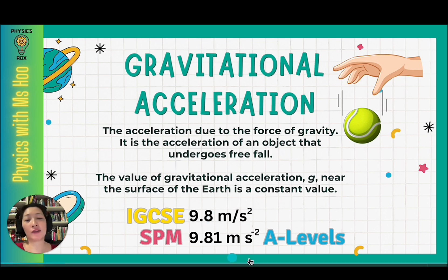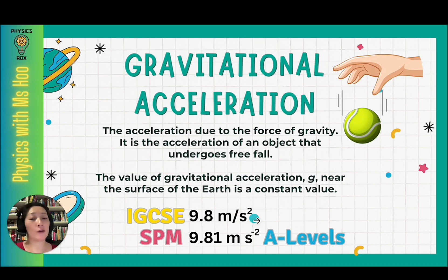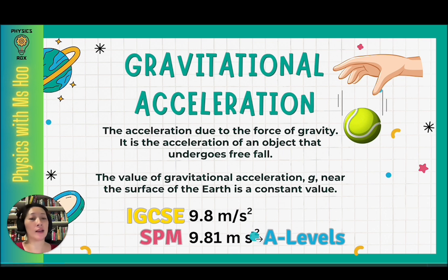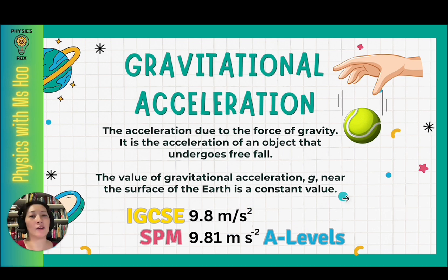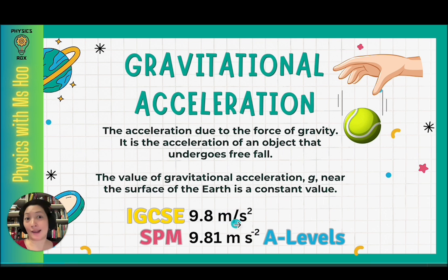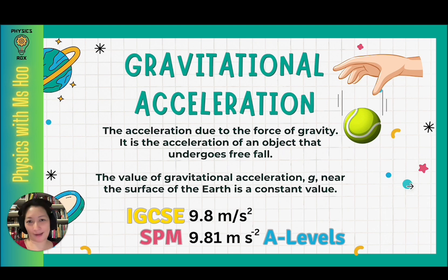The units are written slightly differently: in IGCSE, the preferred way is m/s², whereas in SPM it's ms⁻². Both are accepted. Of course, the more accurate value is 9.81 because there are more decimal places, but if you're doing IGCSE, 9.8 is fine.